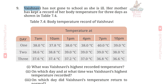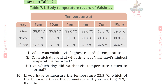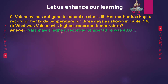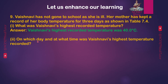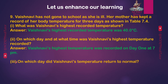Question 9: Vaishnavi has not gone to school as she is ill. Her mother kept a record of her body temperature for three days as shown in Table 7.4. First, what was Vaishnavi's highest recorded temperature? Answer: 40 degrees Celsius. Second, on which day and at what time was her highest temperature recorded? Answer: Vaishnavi's highest temperature was recorded on Day 1 at 7 PM.